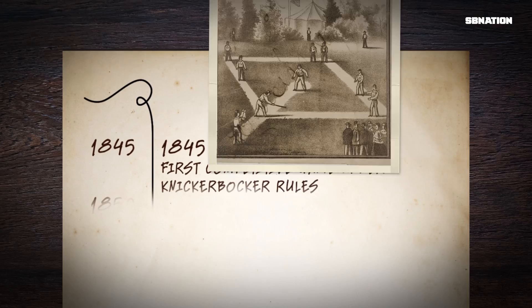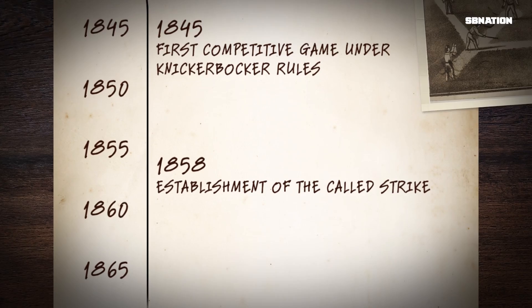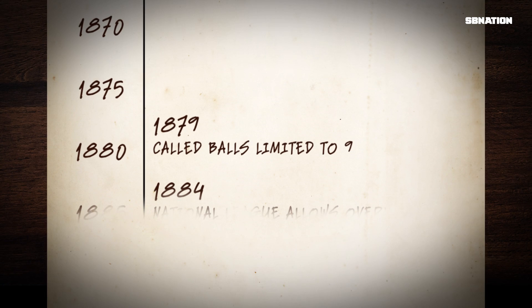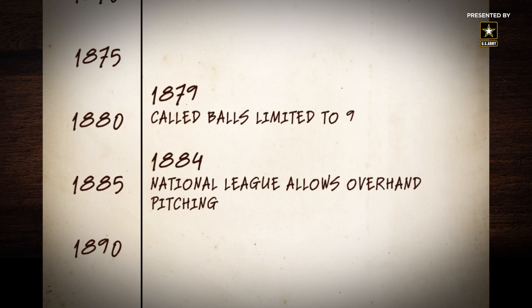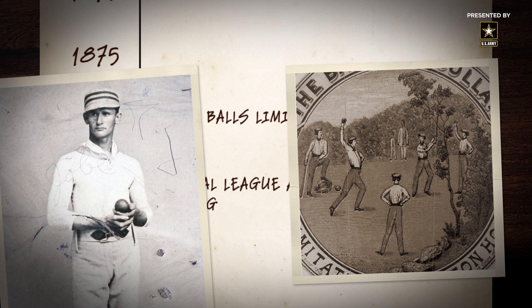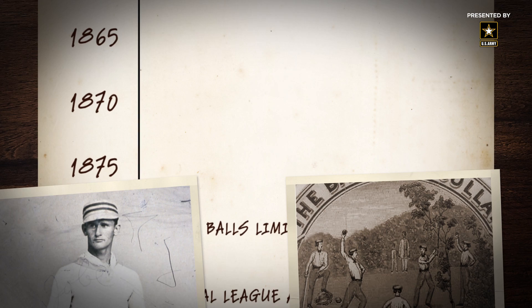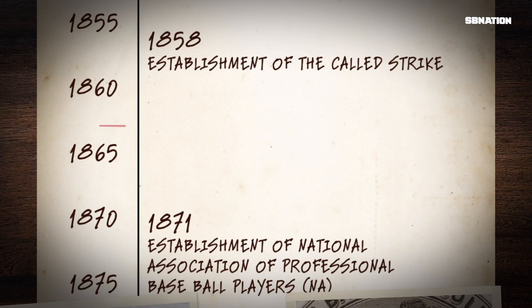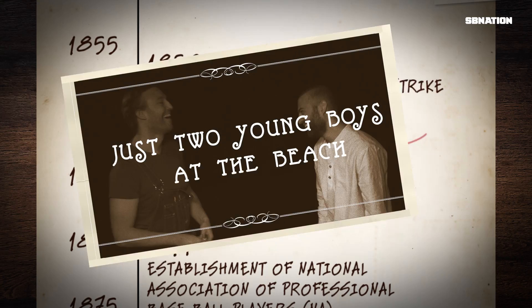The rules surrounding pitching grew alongside the sport. At first, a swing and a miss was the only strike. A called strike didn't exist until 1858. It wasn't until 1879 that there was a limit placed on called balls. And in 1884, the National League voted to lift the ban on overhand pitching. Throughout this time, the pitcher evolved from the initiator in a gentleman's game to a major competitive force in a national sport. The first professional league, with the first players to legally get paid, was in 1871. The story of the curveball, however, starts in 1863, two years after the start of the American Civil War.